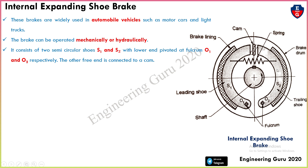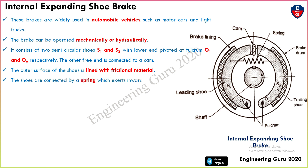The shoes are fitted such that O1 corresponds to S1 and O2 to S2. The other free end of each shoe is connected to the cam. So one end is pivoted at fulcrum O1 and O2, and the other free end is connected to the cam. The outer surface of the shoe is lined with frictional material.